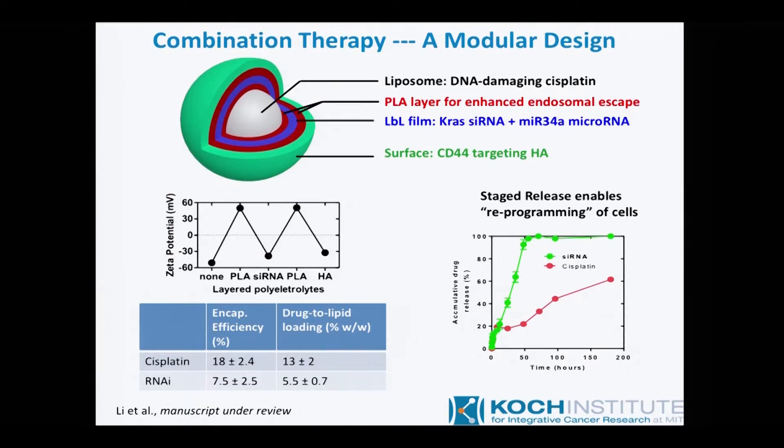In this image, you can see the basics of building the nanoparticle. The zeta potential goes from plus to minus to plus to minus as we layer with poly-L-arginine as the positively charged polymer, then siRNA, poly-L-arginine, and hyaluronic acid. In this case, we use cisplatin, which is the preferred DNA-damaging drug. When we look at the relative rates of release, we have siRNA released fairly rapidly and cisplatin released over a factor of three to four times slower.